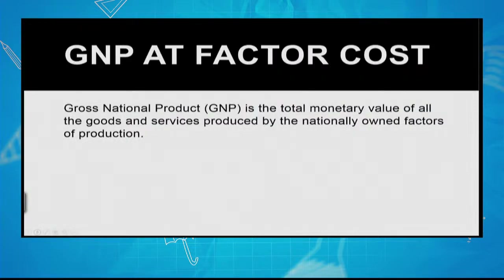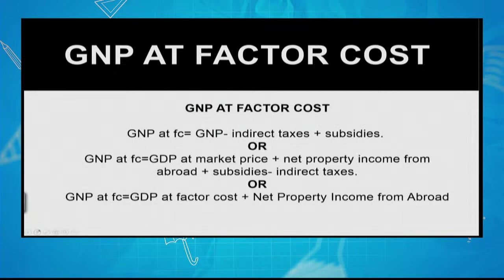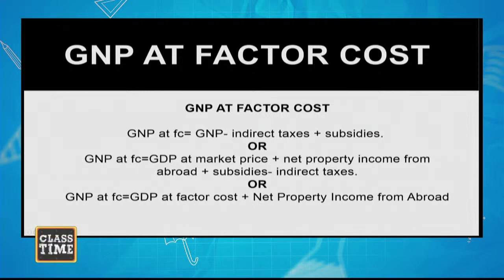To get GNP at factor cost, you need to remove the effect of subsidies and taxes. You can calculate it as GNP minus indirect taxes plus subsidies, or alternatively as GDP at market price plus net property income from abroad plus subsidies minus taxes. Use whichever method is easier for you to recall.